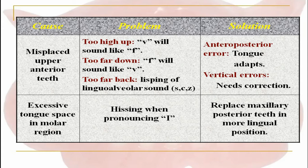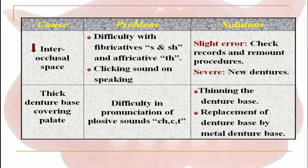If the cause is excessive tongue space in the molar region, the problem is hissing when pronouncing 'i'. The solution could be to replace the maxillary posterior teeth in a more lingual position. If the cause is decreased interocclusal space, the problem is difficulty with fricative sounds like 's', 'sh', and affricatives, and clicking sounds on speaking. For slight errors, checking records and remount procedures could be enough.